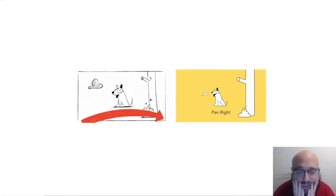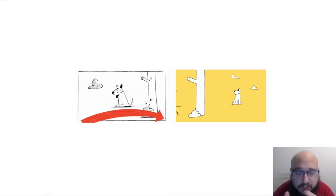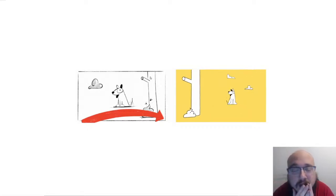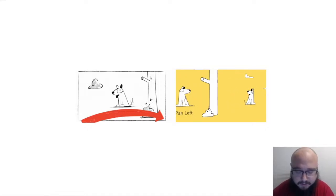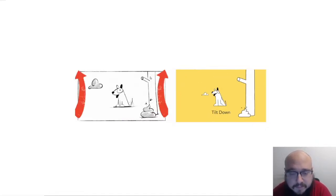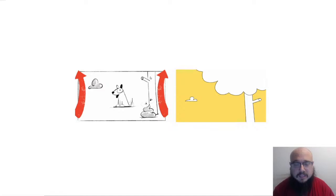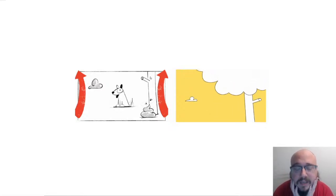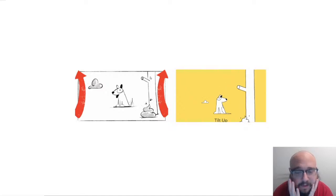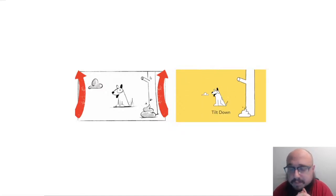Panning left and right is great for establishing something around the corner or just off screen — an actor hears a noise and the camera pans to reveal it. Panning is really good for reveals. Tilting is similar but vertical — the camera tilts up or tilts down while the tripod stays stationary. Tilting is good for revealing something above or below the current frame.